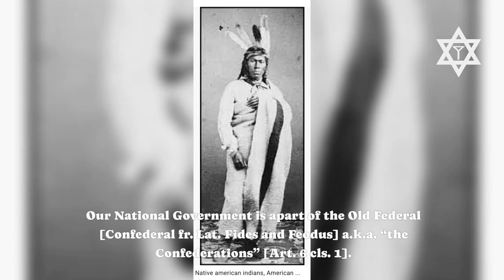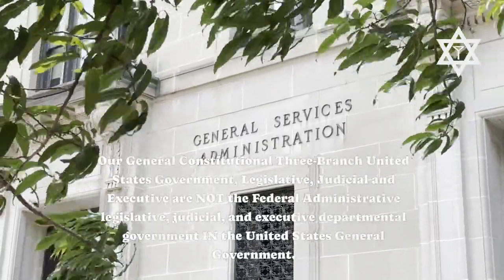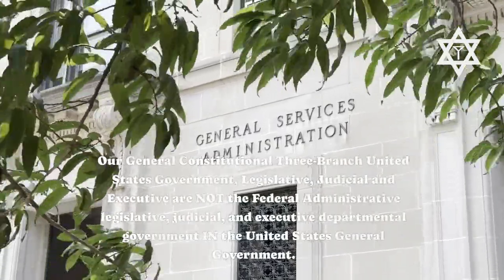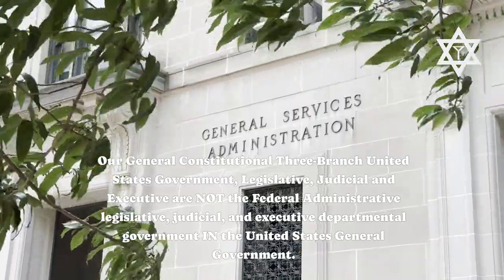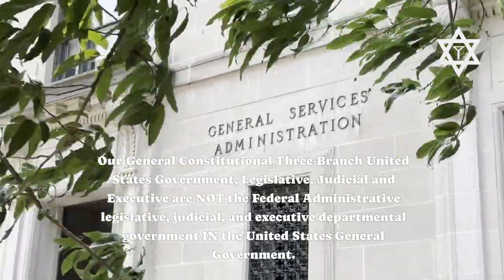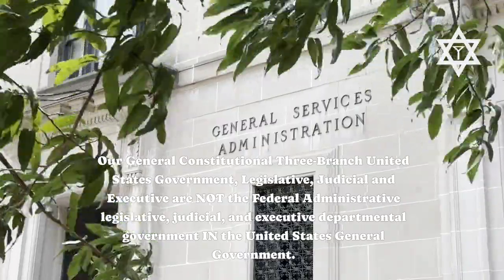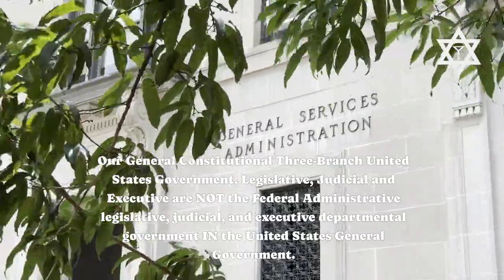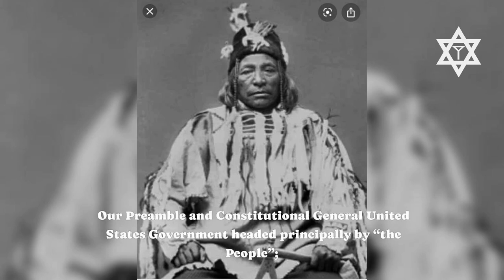Our national government is a part of the old federal confederal — father, Lat. fides and feitis — aka the Confederations, Art. 6 Cls. 1. Our general constitutional three-branch United States government — legislative, judicial, and executive — are not the federal administrative legislative, judicial, and executive departmental government in the United States general government.